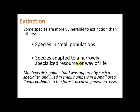Some species are more vulnerable to extinction than others. Species in small populations are vulnerable because it doesn't take losing many members before the population struggles to reproduce sufficiently. Species adapted to a narrowly specialized resource or way of life are also very vulnerable — any change to the conditions they require and they're likely to go extinct. Monteverde's golden toad, which lived in Costa Rica in small numbers in a small area, was apparently such a specialist — endemic to the forest, occurring nowhere else.